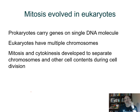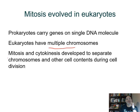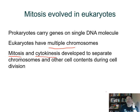Mitosis did evolve in eukaryotes. They have multiple chromosomes, so that process of mitosis — and then full cell division called cytokinesis — was a necessary step in the evolution of eukaryotes.